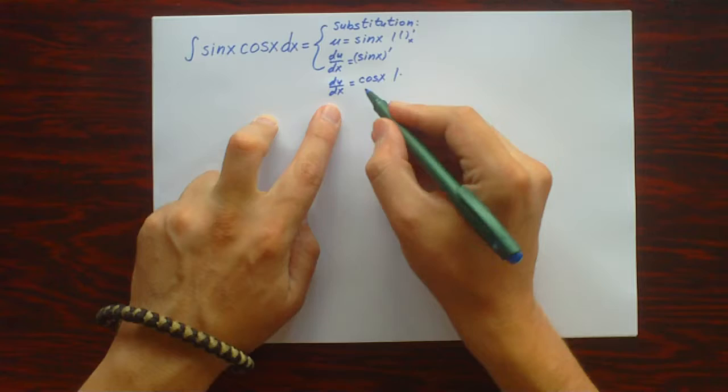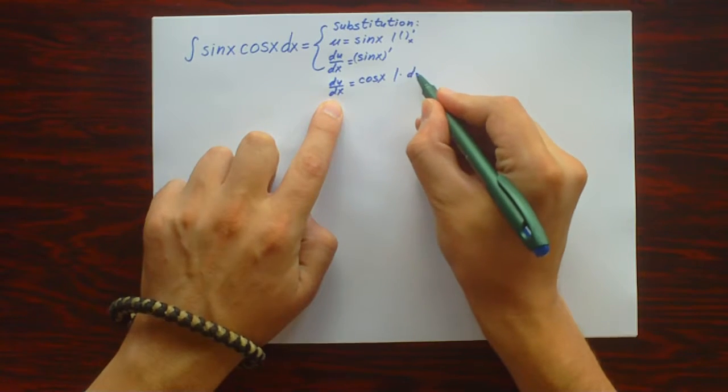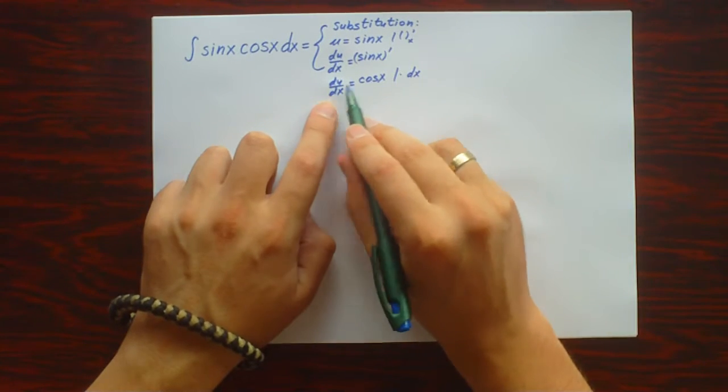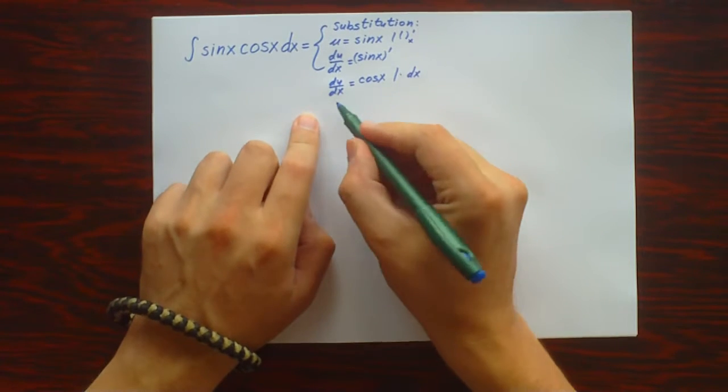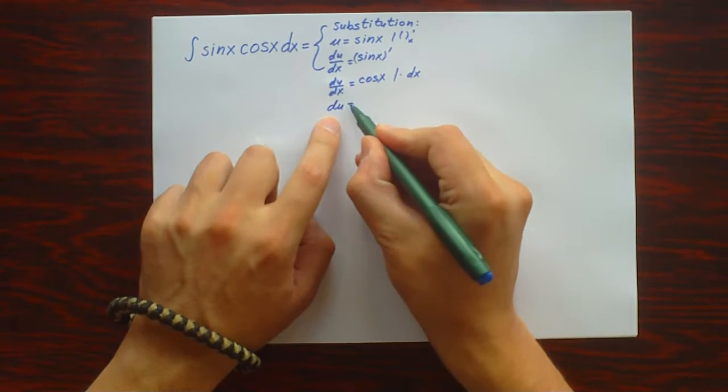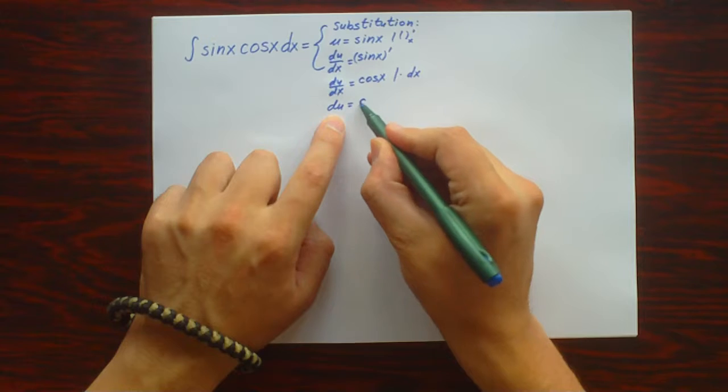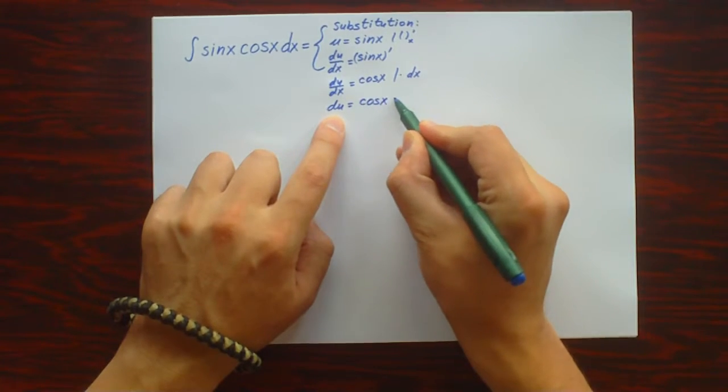We're going to multiply both sides of the equation by dx, and finally we get du equals cos x dx.